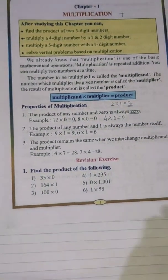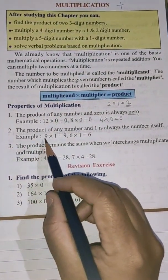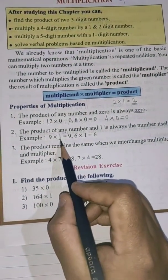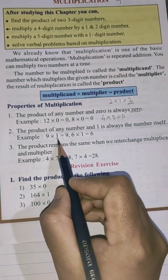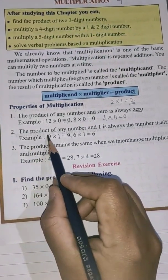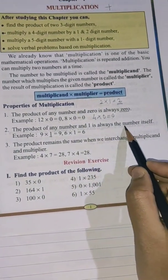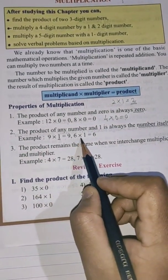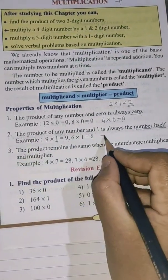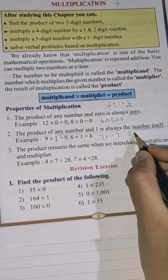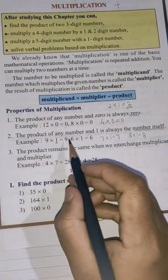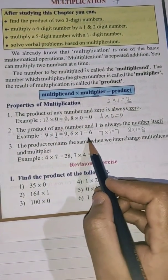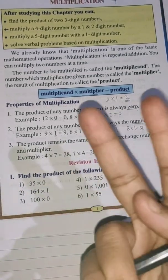The second property is: if any number is multiplied by 1, the product will be the number itself. The product of any number and 1 is always the number itself. For example, 9 into 1 is equal to 9, 6 into 1 is equal to 6, 7 into 1 is equal to 7, and 8 into 1 is equal to 8. So this is the second property.